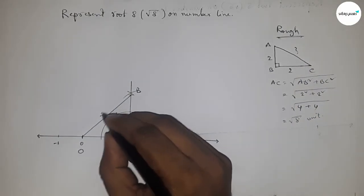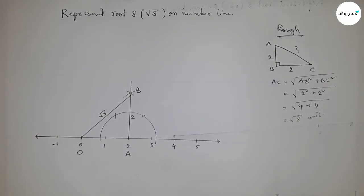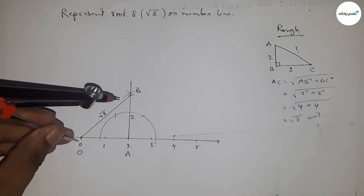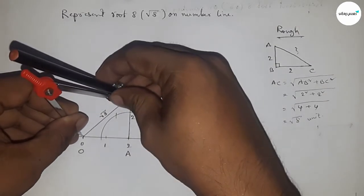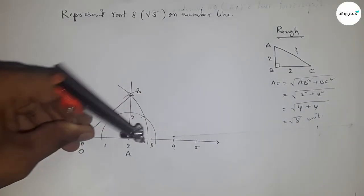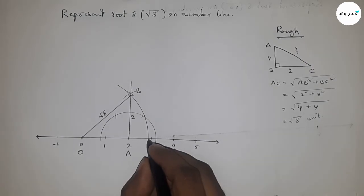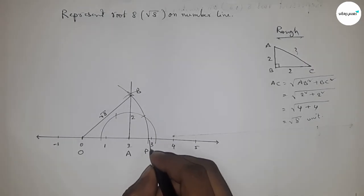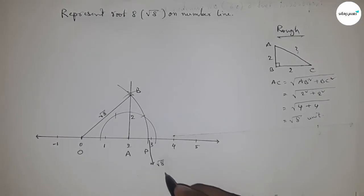Now taking the length OB by compass and drawing an arc which meet the number line at a point, and this is the representation of root 8 on number line.